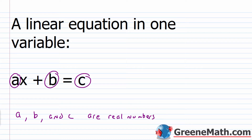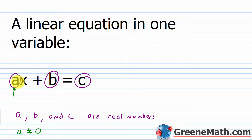There's one exception: A, which is the coefficient for X, cannot be 0. So A cannot be 0. Obviously that's the case because we want our variable X to be there. If I put a 0 in for A, 0 times anything is just 0, so the variable term would disappear and we would no longer have a linear equation in one variable.